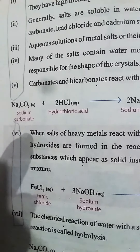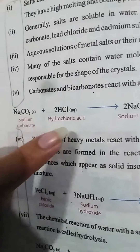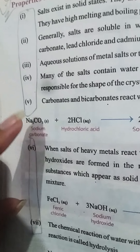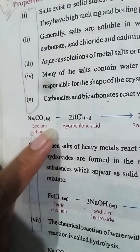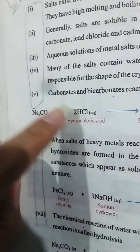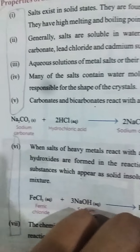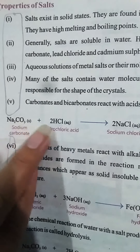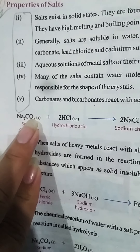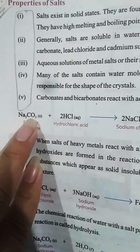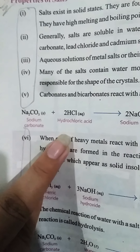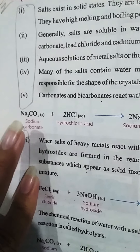Next we discuss carbonate or bicarbonate reactions with acids. When sodium carbonate reacts with hydrochloric acid, the sodium reacts with the chlorine molecule to form two molecules of sodium chloride. The remaining carbonate and two hydrogen molecules react with oxygen to form a water molecule, and the remaining product is CO₂, that is carbon dioxide. This means that when carbonates or bicarbonates react with hydrochloric acid, they liberate carbon dioxide gas.